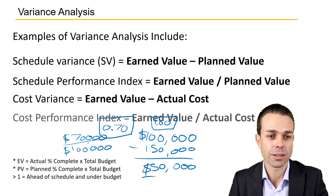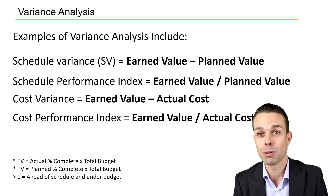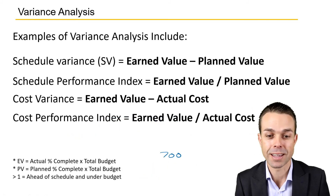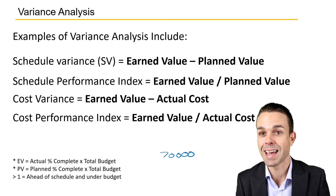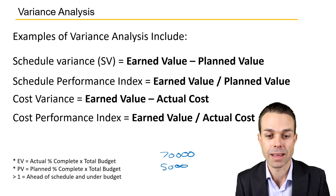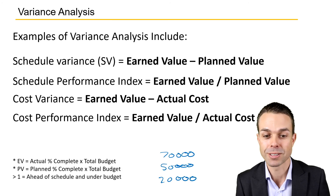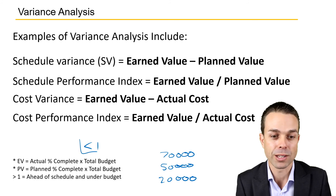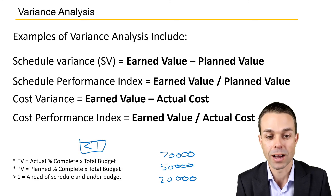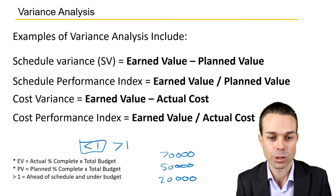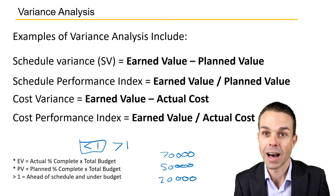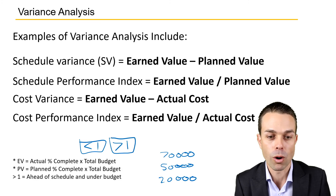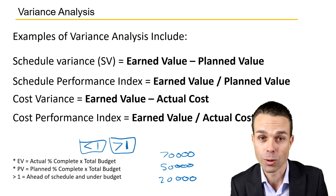Cost variance and the cost performance index are the same concept applied to cost. For cost variance, we look at earned value minus actual cost — say $70,000 earned minus $50,000 actually spent means we are $20,000 ahead in that scenario. For the cost performance index, if it's under one, we've delivered less value and are over budget. And this is a little confusing: if we're over one for our cost performance index, then we are under budget — we've delivered more value than the normal amount.